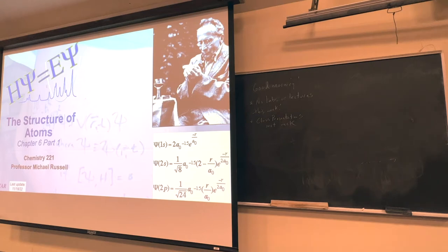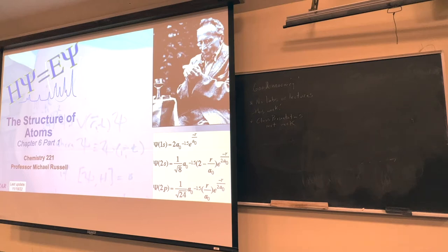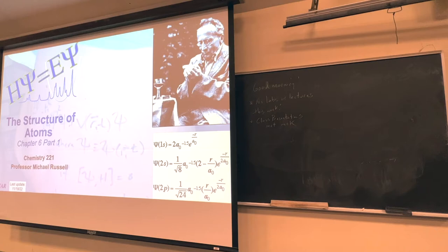That's way more than we will do in Chem 221 — calculus is not a prerequisite. But we will talk about the results and how they apply to chemistry. In this picture behind me there's actually a woman's stomach with wave equations written on it. I put that up because this stuff can get a little strange — on the atomic level things don't make sense in our macroscopic world. Just keep that in the back of your mind as we go through this interesting chapter.